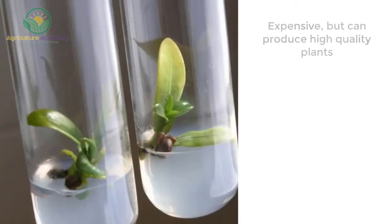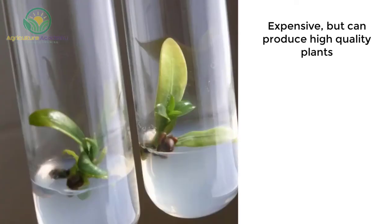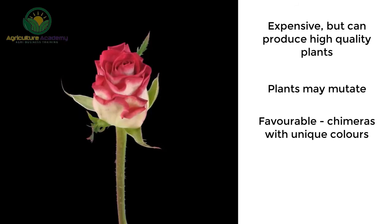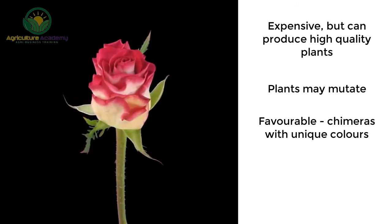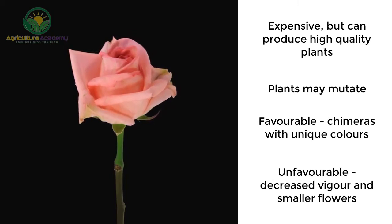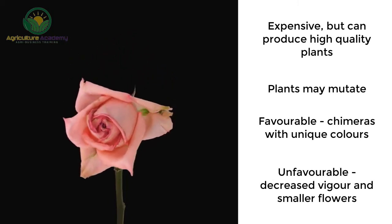In Vitro Propagation. The in vitro methods are expensive but can produce high-quality plants. However, the plants may undergo mutations. These can be favorable and produce chimeras that have unique flower colors. The mutations can also be unfavorable, such as decreased vigor and smaller flowers.